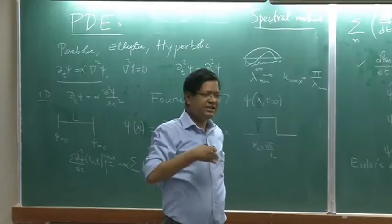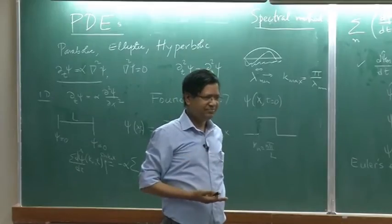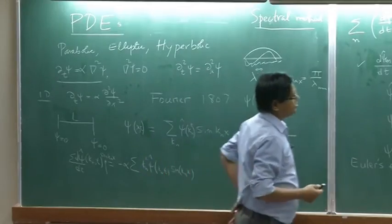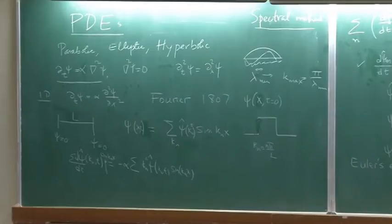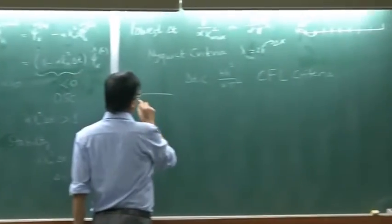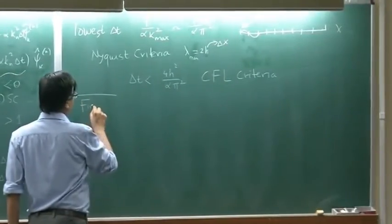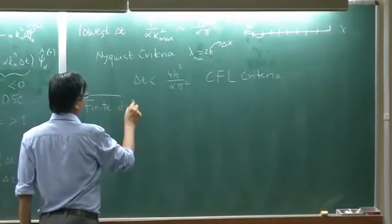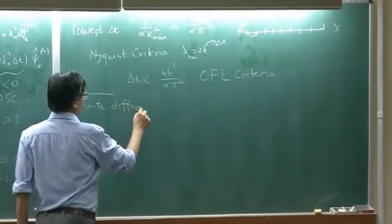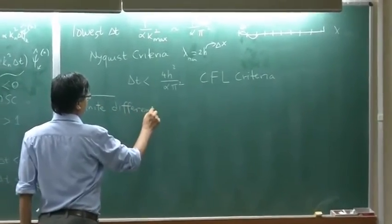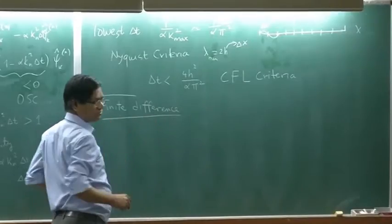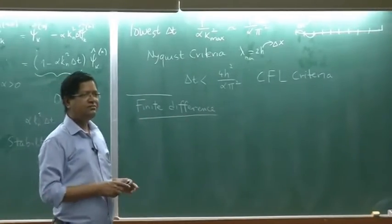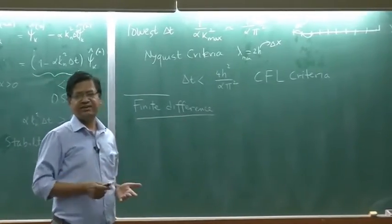Now let us try to do this in real space. The new method I am going to describe now is called finite difference. We will discretize in both real space and time.